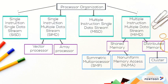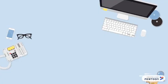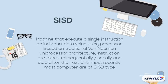For shared memory, it is divided by two. First, symmetric multiprocessor SMP. Second, non-uniform memory access NUMA. For distributed memory, there is only a cluster.